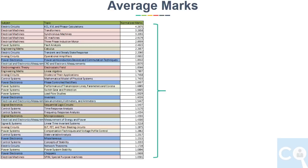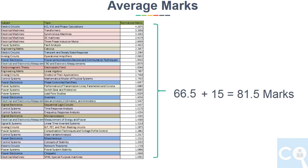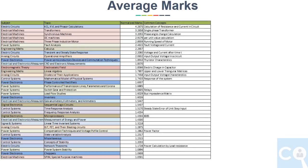Arranging these averages from highest to lowest gives us the most to least important topics. If you add the first 37 topics out of 77, you get 66.5 marks. Adding 15 marks for aptitude gives you 81.5 marks. I have also gathered common concepts asked by IIT Madras from these topics in an Excel sheet, the link for which will be shared in the drive — its link is given in the description.